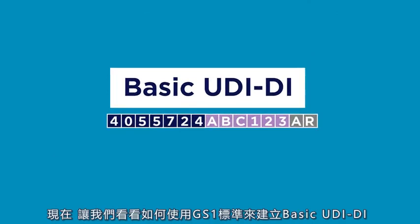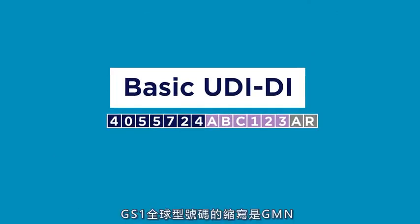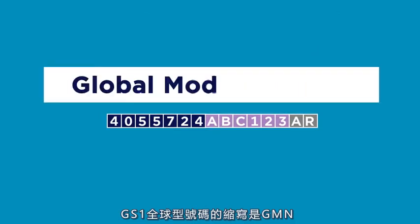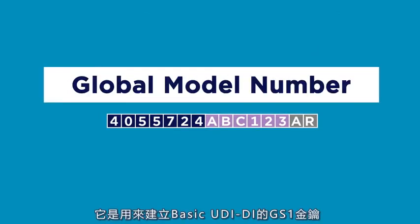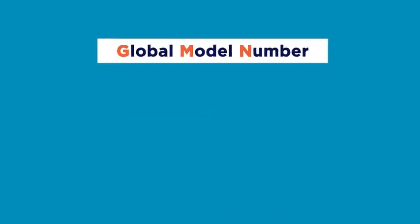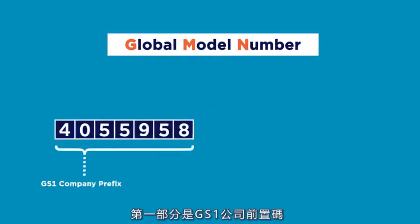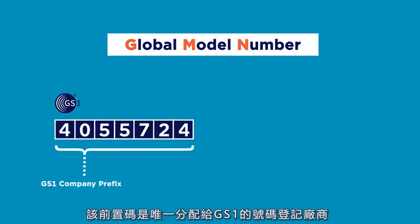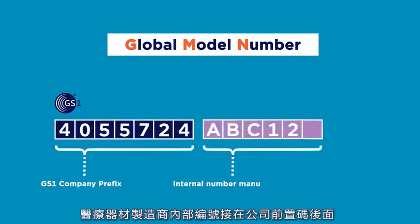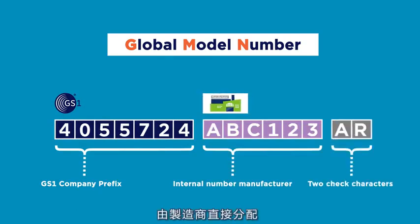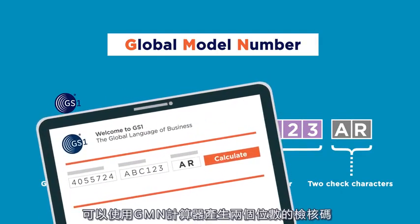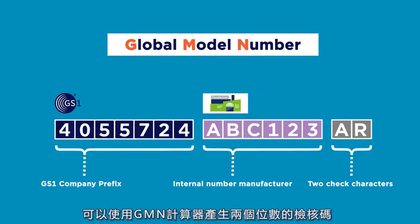Now let's see how you can build the basic UDI-DI with GS1 standards. The GS1 global model number, abbreviated GMN, is a GS1 key which allows the creation of a basic UDI-DI. The first part is the GS1 company prefix, which is uniquely assigned to a GS1 member company. The manufacturer internal number for that group of devices follows, which is assigned directly by the manufacturer. At the end of the GMN, there are two check characters, which can be generated using the GMN calculator.